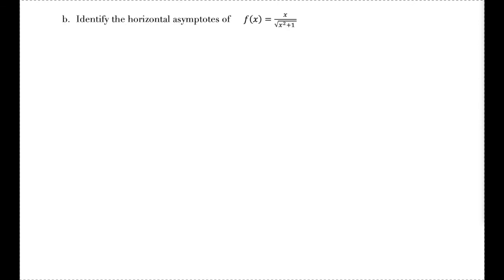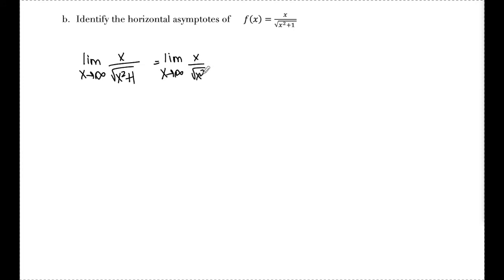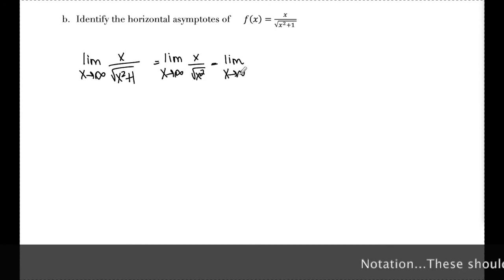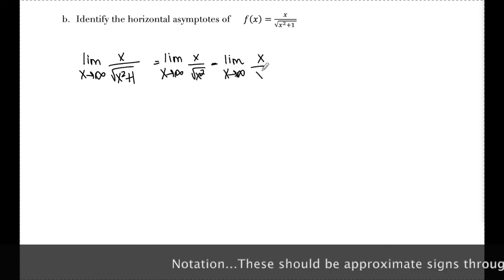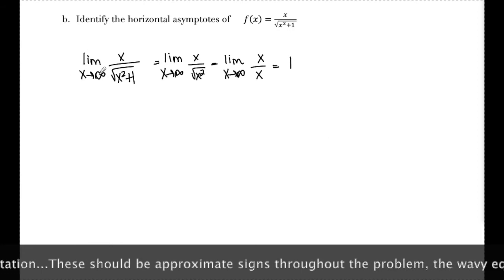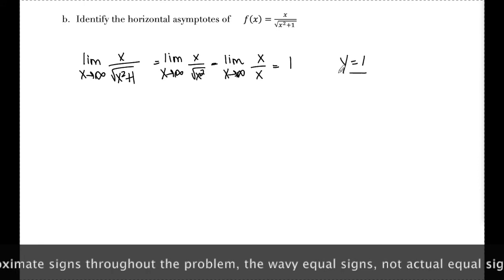Part B: identify the horizontal asymptotes of f(x) = x / √(x² + 1). I'll first look at the limit as x approaches infinity. The square root makes comparing degrees tricky, so I focus on √(x²) in the denominator, ignoring the +1. The limit as x→∞ of x/√(x²) simplifies to x/x = 1. Since the limit as x→+∞ is 1, I have a horizontal asymptote at y = 1.